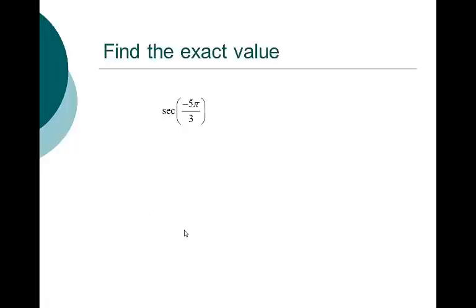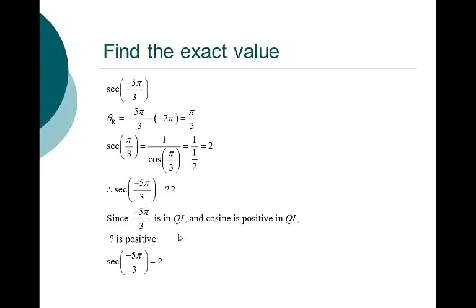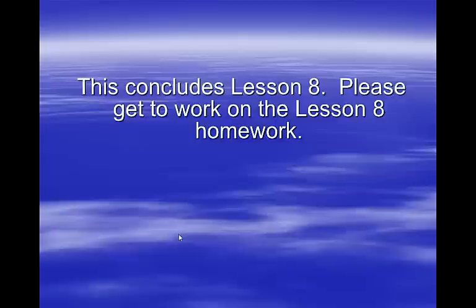Secant of negative 5 pi over 3: my reference angle is pi over 3. The cosine of pi over 3 is 1/2. The reciprocal of 1/2 is 2. We end up with 2 because we're in quadrant 1 — negative 5 pi over 3 stretches around to quadrant 1, where everything is positive. This concludes lesson 8. Please get to work on the homework for lesson 8.